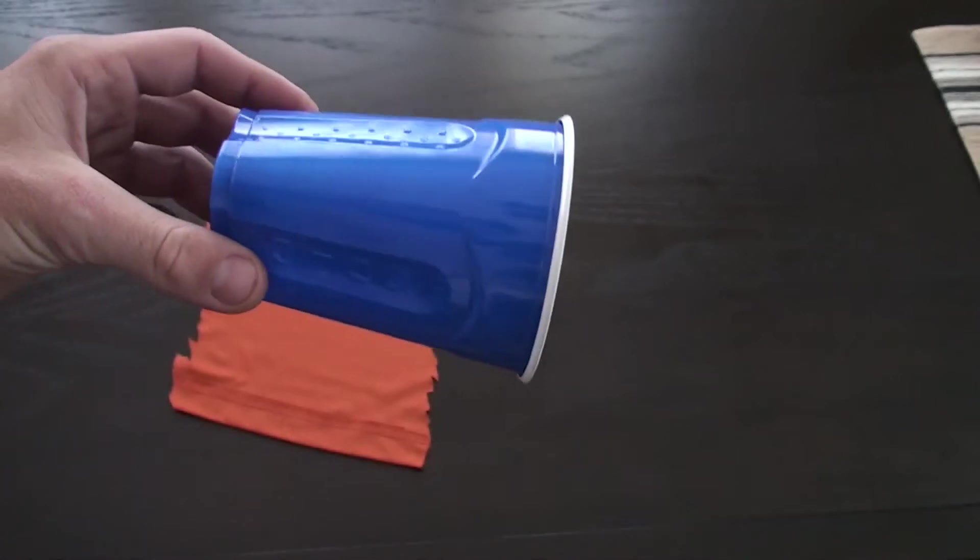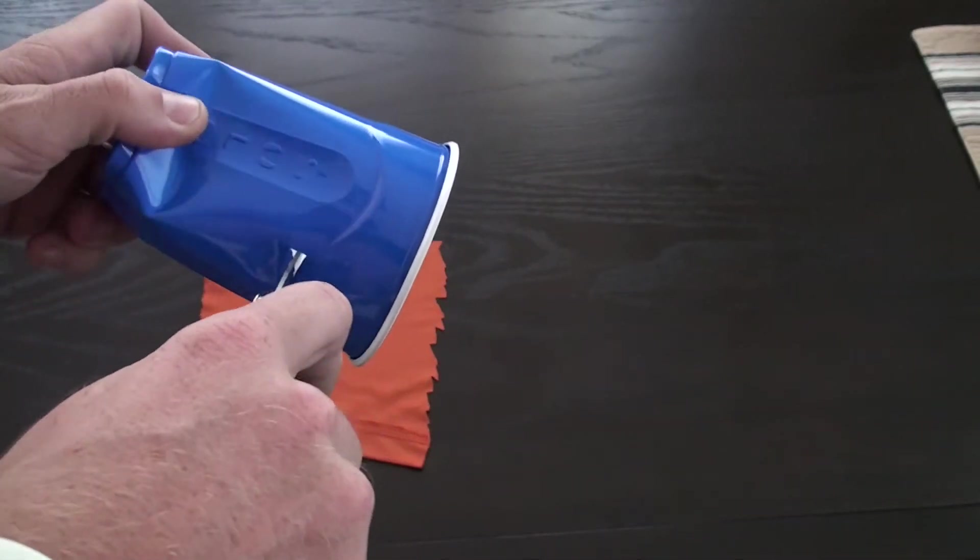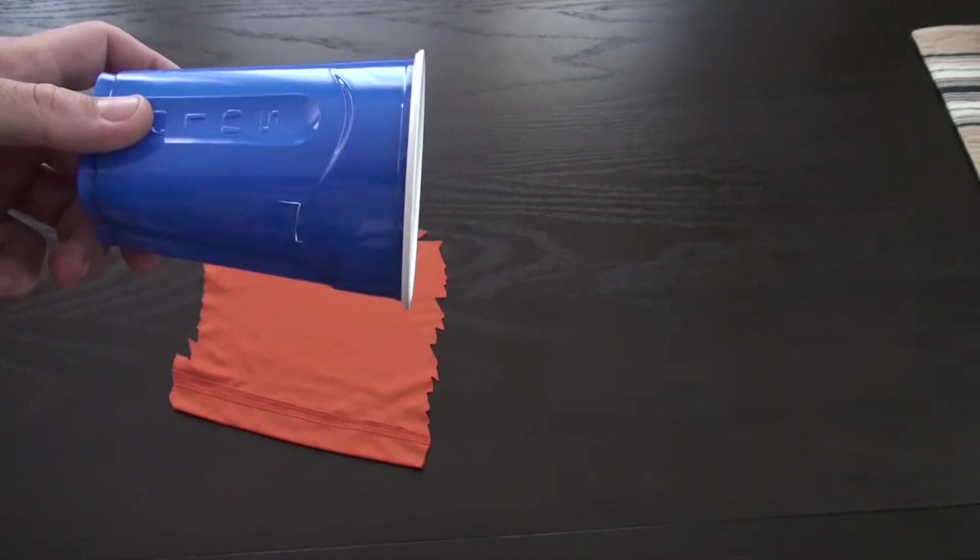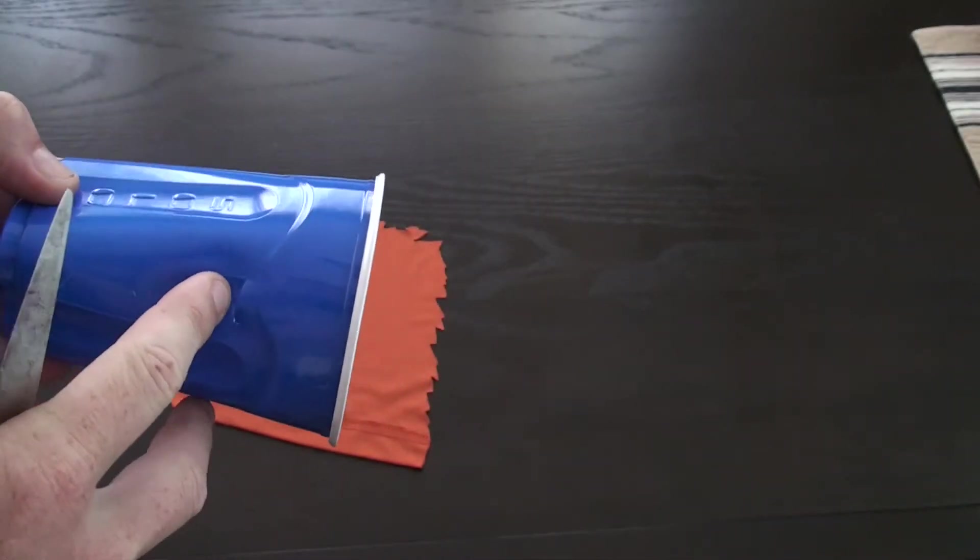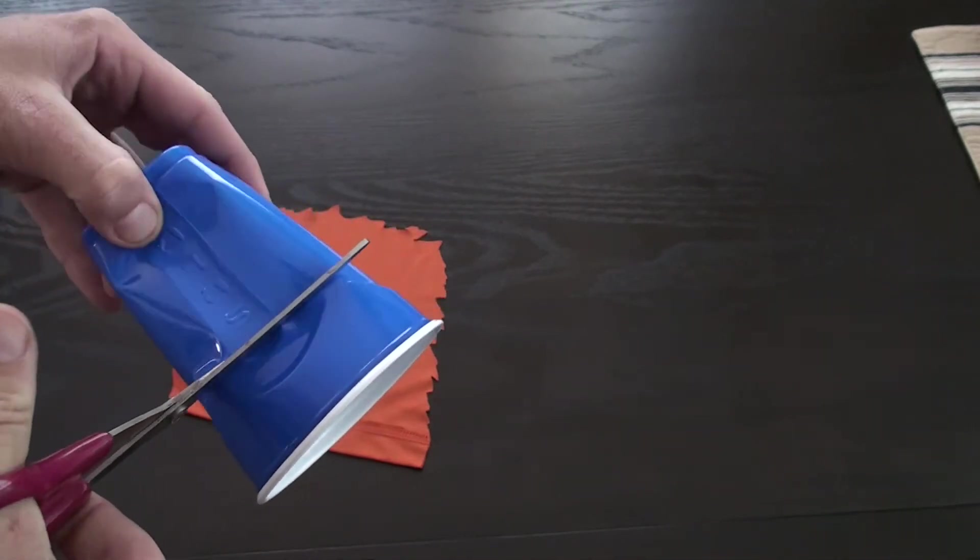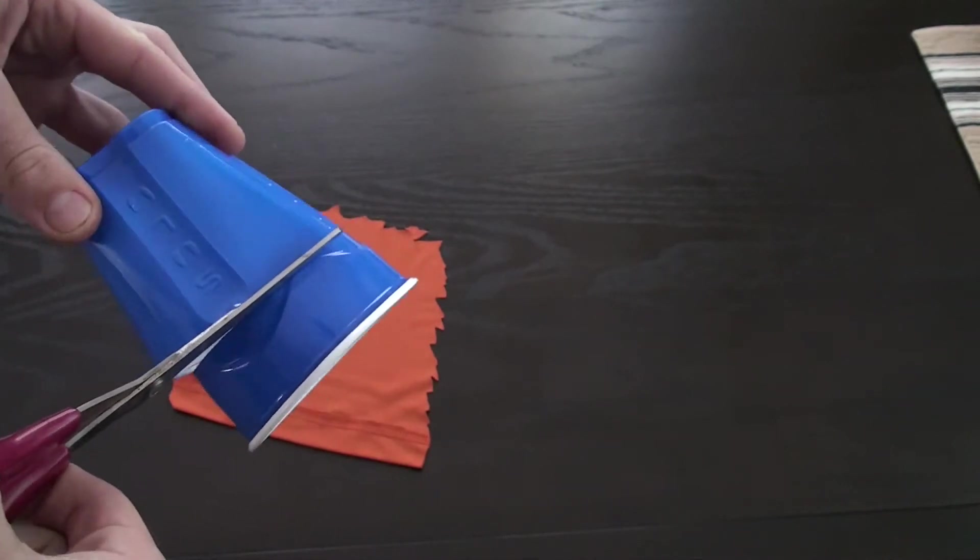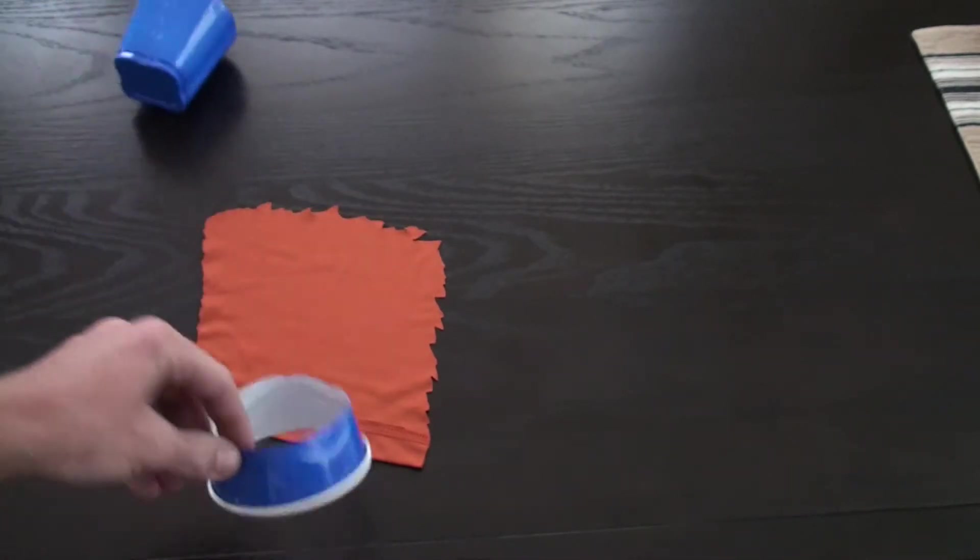Using your knife, you want to create a small hole on the cup, maybe an inch, an inch and a half down. The reason we do this is to get it started for the scissors. It's much easier to poke a hole and then to get your scissors going through. Take your scissors and go along that hole, removing the top end from the rest of the cup.